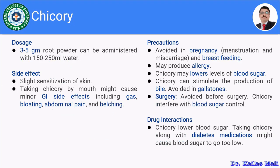Let us move towards the dosage, side effects, precautions, and drug interactions of Chicory. Approximately 3 to 5 grams of root powder can be administered with 150 to 250 ml of water. These are the dosage guidelines for Chicory.